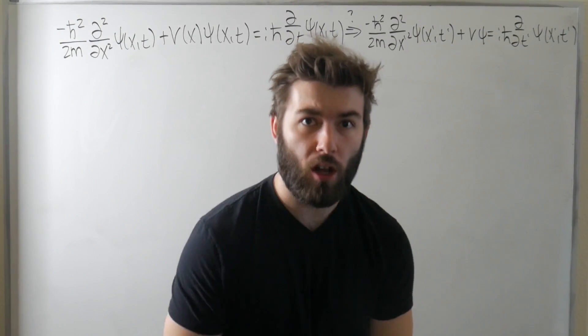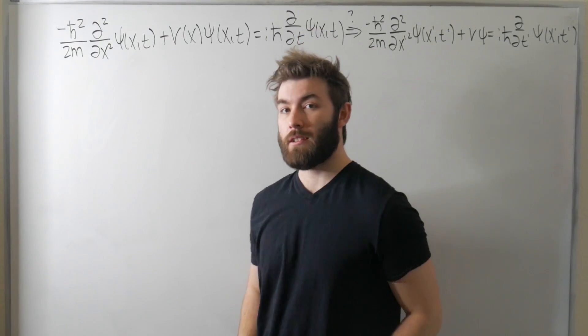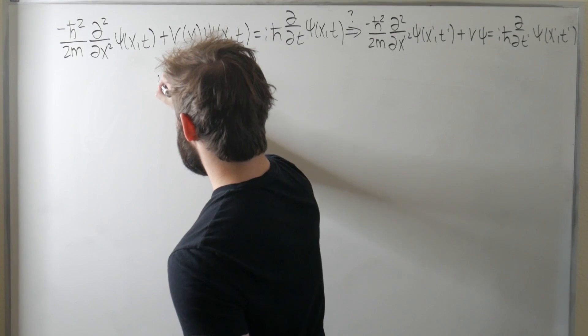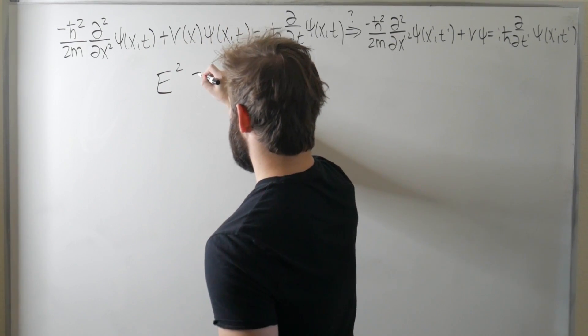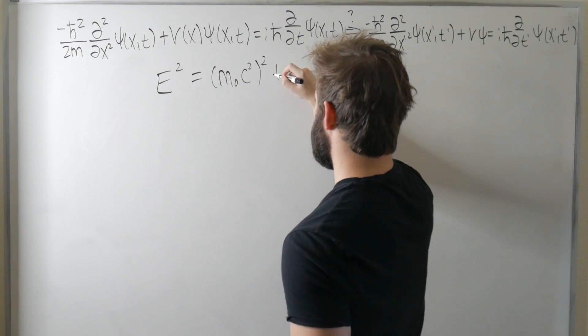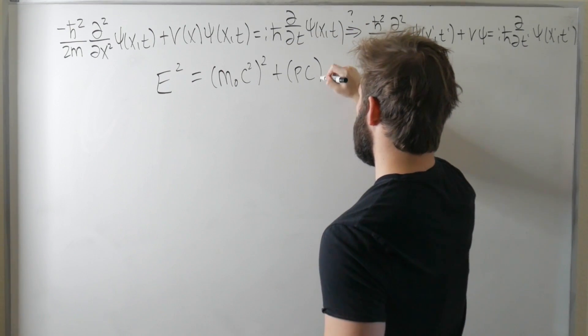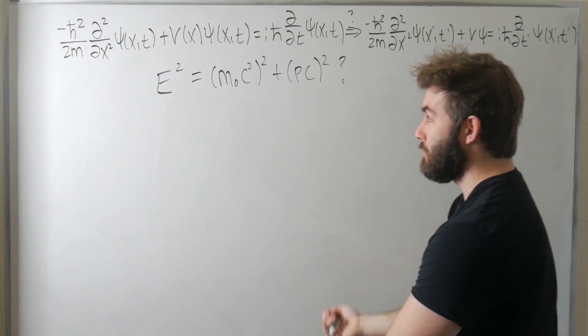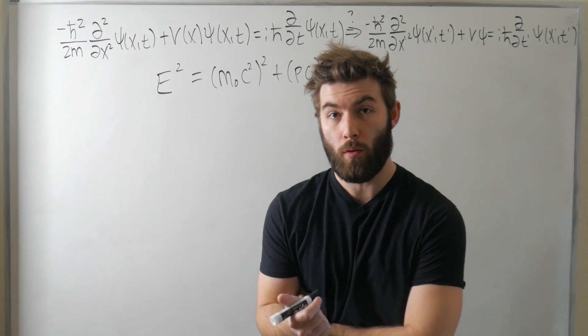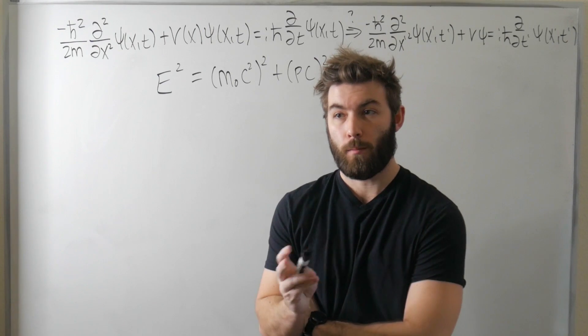However, what is a much larger red flag to me is the fact that the Hamiltonian is constructed from the classical Hamiltonian. At no point do you use Einstein's energy relation E squared equals mc squared squared plus pc squared. Where is this? It is nowhere. A non-relativistic Hamiltonian will give you a non-relativistic Schrödinger equation. Probably.